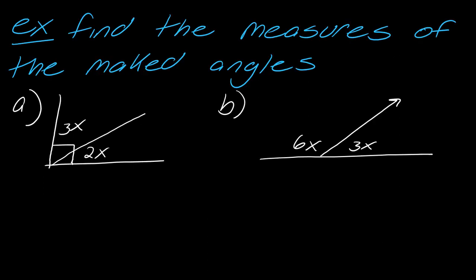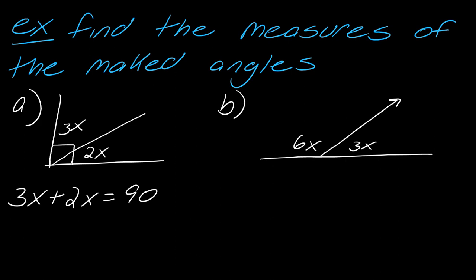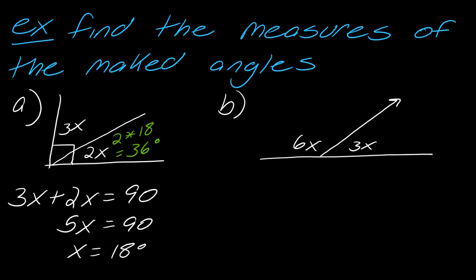Here are a few other questions playing on that idea of complements and supplements. You could be given two angles and asked to find the marked angles. This angle, because it has the right-angle symbol, I know it's a 90-degree angle. So I can say that if I add the two expressions — 2x and 3x — they should equal 90. So 5x equals 90, and x equals 18 degrees. The first angle is 2 times 18 = 36 degrees, and the other is 3 times 18 = 54 degrees.